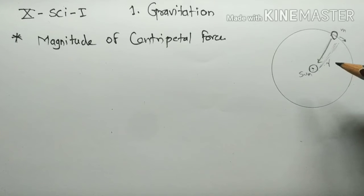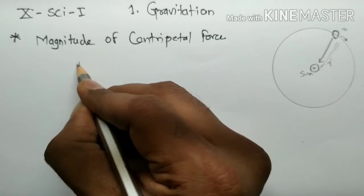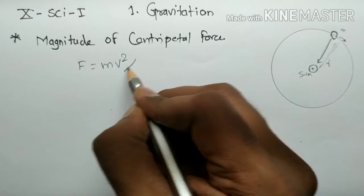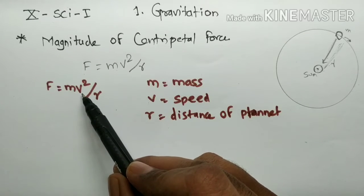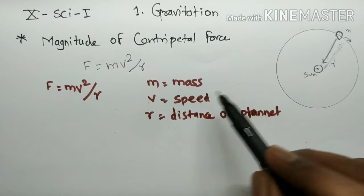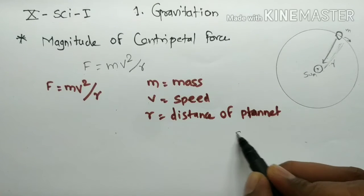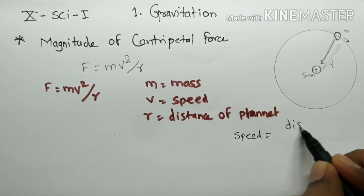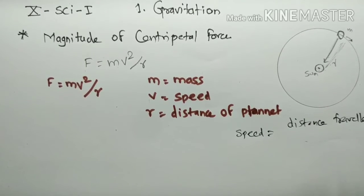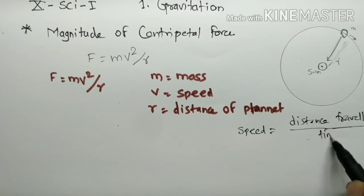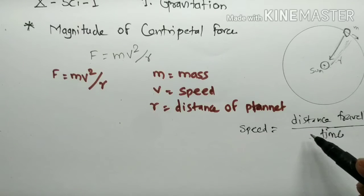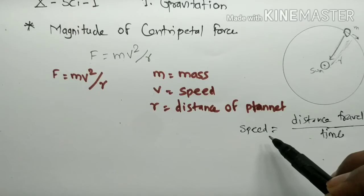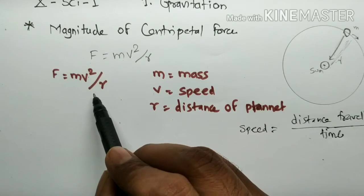It can be shown that the force F equals mv²/r. Here, F = mv²/r. v²/r means v is the speed — speed is distance travelled divided by time taken. The time required to travel a distance depends on the speed, so speed is calculated as distance travelled divided by the time required.